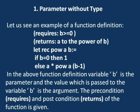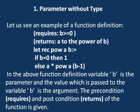For parameter without type, consider this example: requires b >= 0, returns a to the power of b. Written as: let reg power(a, b) := if b = 0 then 1, else a * power(a, b-1). In the above function definition, the variable b is the parameter and the value passed to variable b is the argument. The precondition is 'requires' and the post-condition is 'return'.